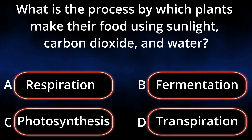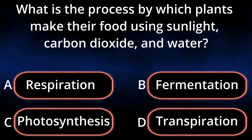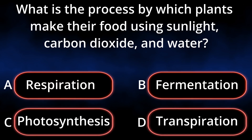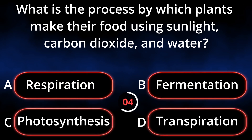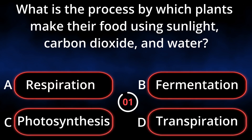What is the process by which plants make their food using sunlight, carbon dioxide, and water? A. Respiration. B. Fermentation. C. Photosynthesis. D. Transpiration. Answer: Photosynthesis.